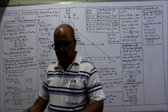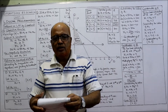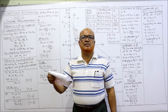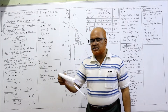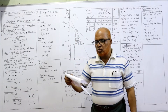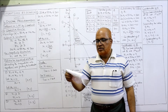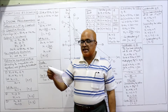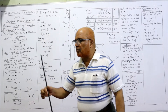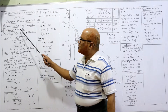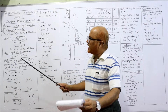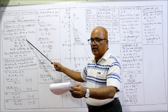Now see the sixth problem: solve the following LPP using graphical method. Maximize z = 80x1 + 120x2. This is the objective function. Subject to constraints, four constraints are given: x1 + x2 ≤ 9. Here I have written the same problem — objective function: maximize z = 80x1 + 120x2, subject to: x1 + x2 ≤ 9.